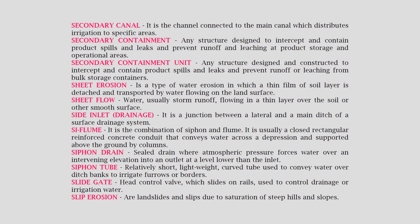Sheet erosion: a type of water erosion in which a thin film of soil layer is detached and transported by water flowing on the land surface. Sheet flow: water, usually storm runoff, flowing in a thin layer over the soil or other smooth surface. Side inlet drainage: a junction between a lateral and a main ditch of a surface drainage system.